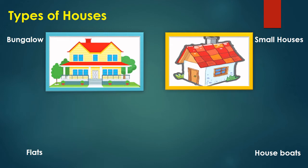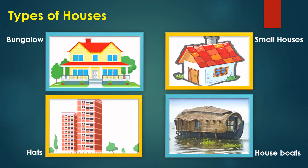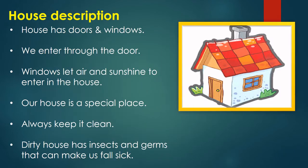The third one is a flat — we have tall buildings and in those we have flats allocated. The fourth one is the houseboat. Can we imagine a house on a boat? This houseboat can be seen in some places like Kerala. These are moving houses in water.